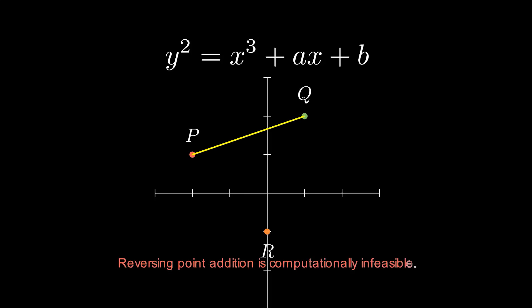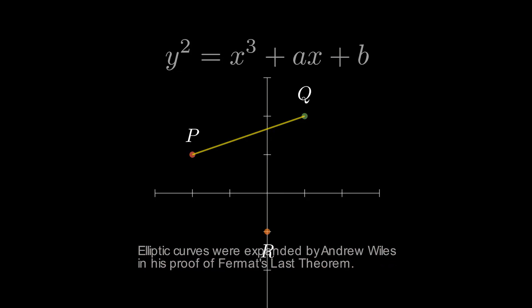Points on these curves form a mathematical group. Adding points is simple, but reversing the operation, meaning solving a discrete logarithm, is computationally infeasible. And this method traces back to Andrew Wiles' proof of Fermat's last theorem, which expanded elliptic curve theory.